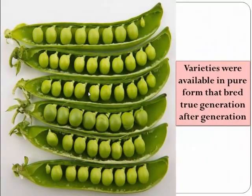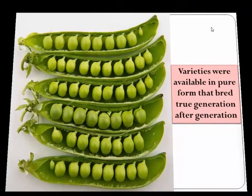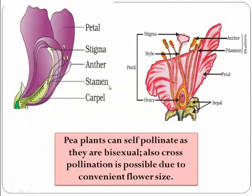The next reason was that there were several varieties available in pure form that breed true — that is, they produced the same type of generation after generation. The next reason was that the pea plant can self-pollinate, as they are bisexual. Also, cross-pollination is possible due to the convenient flower size.